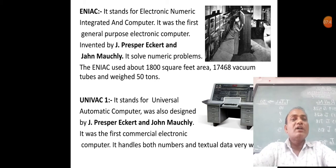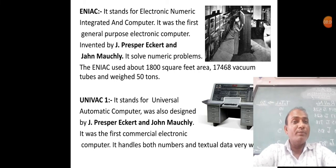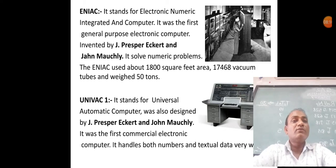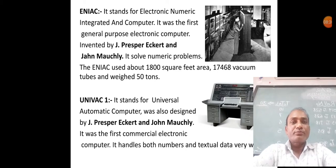The ENIAC used about 1800 square feet of area — it was a very huge device. It used 17,468 vacuum tubes and weighed about 50 tons. So ENIAC was a very large device that used vacuum tubes for computation.